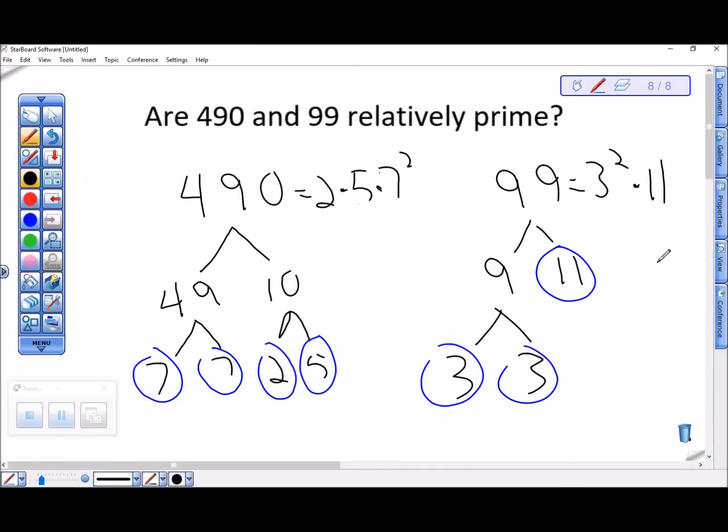Since they share no common factors here, none of the primes are factors, their greatest common factor is 1. And the answer to this question is yes, these two numbers are relatively prime because their greatest common factor is 1.